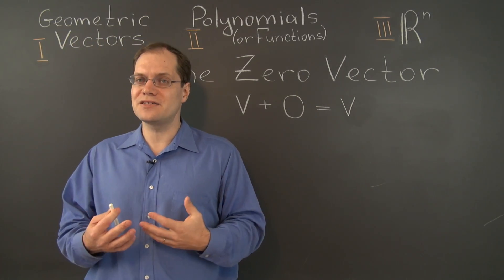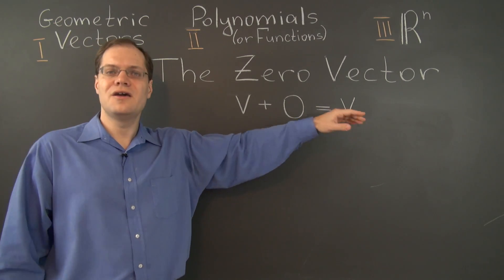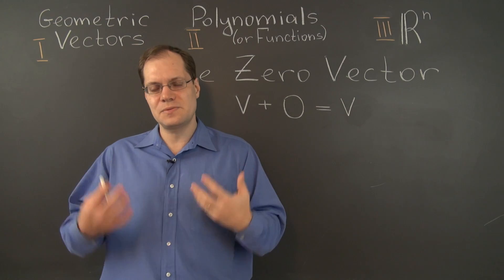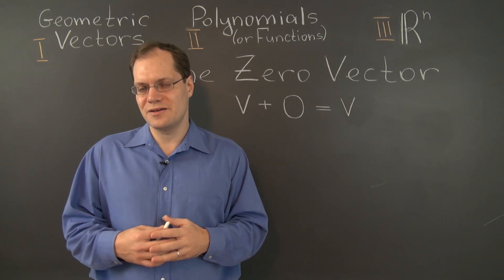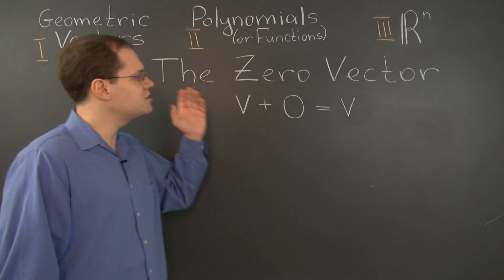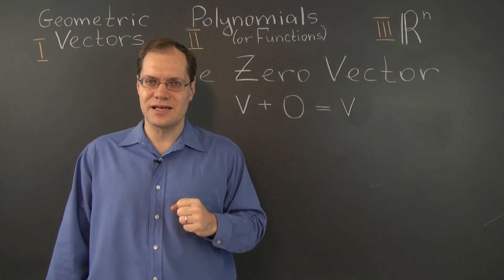Even though in different vector spaces the zero vector is characterized by the same defining property, it looks very different in different spaces. That's just because there is great diversity among vector spaces. So let's go over each one of our examples and talk about what the zero vector looks like.